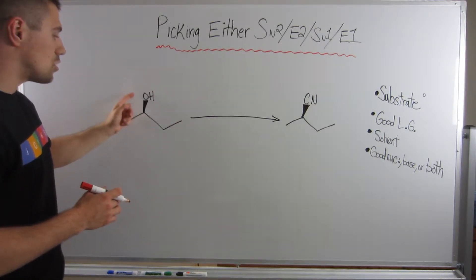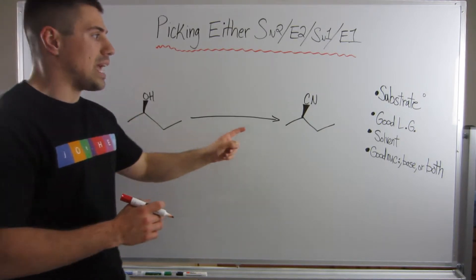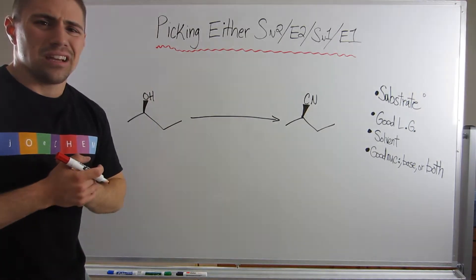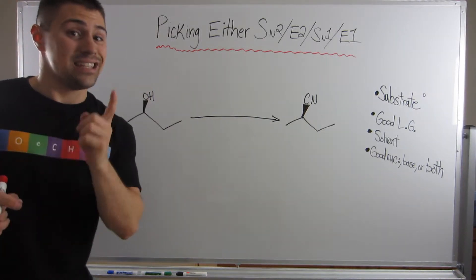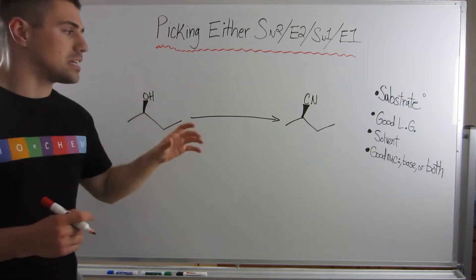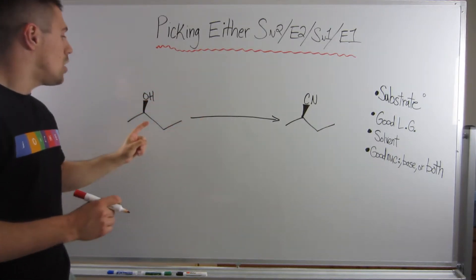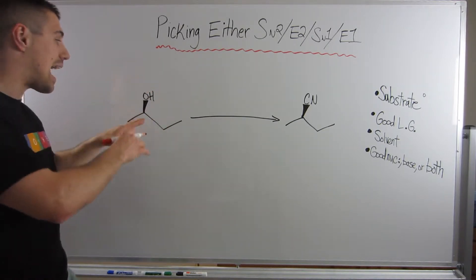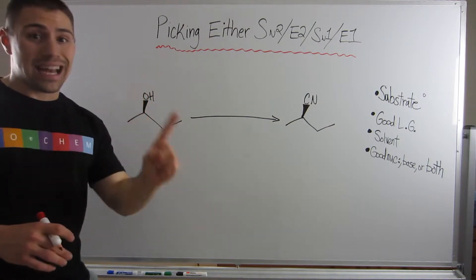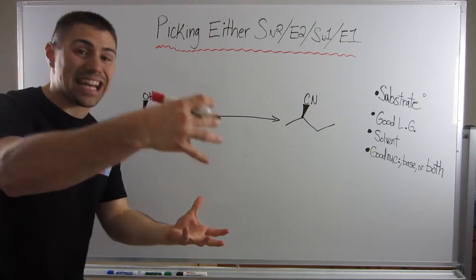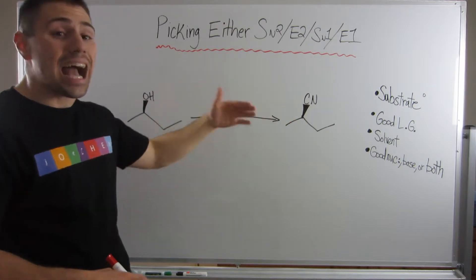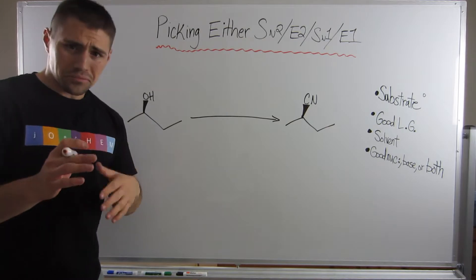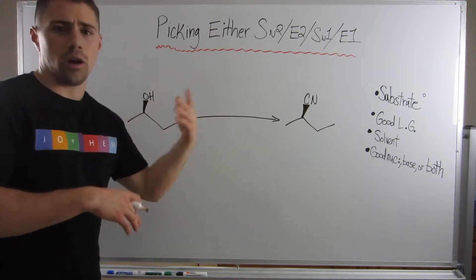However, and I hope you're thinking about this, along the lines of SN2, we know SN2 backside attack involves stereochemical inversion. It inverts your stereocenter, your configuration at that center. And you see here, if we're starting off with this wedged OH, we actually have a wedged CN at the end. So we might be scratching our heads thinking, is this really SN2? And it is, in disguise, it's actually a double SN2.